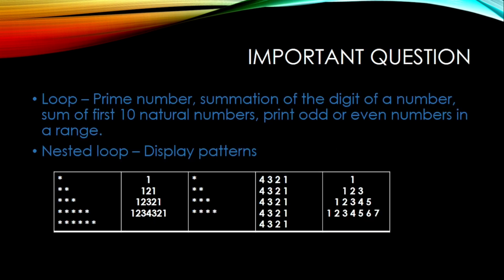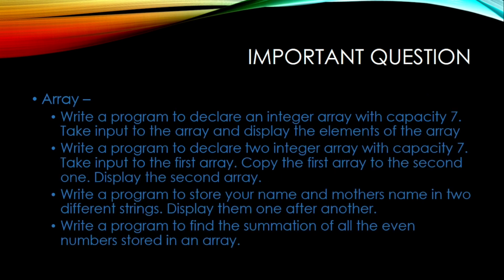Now let's move to the important questions from C. From loops, you can see these programs: prime number, summation of the digits of a number, sum of 10 natural numbers, and print odd or even numbers in a range. These types of programs you can see from Chapter 4 and Chapter 5. For nested loops, they will generally give you patterns to draw. If you know how to draw these patterns, you can easily do it.